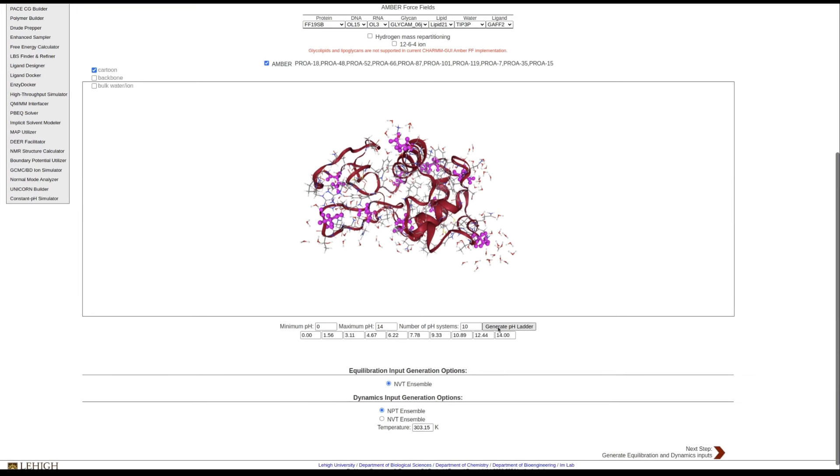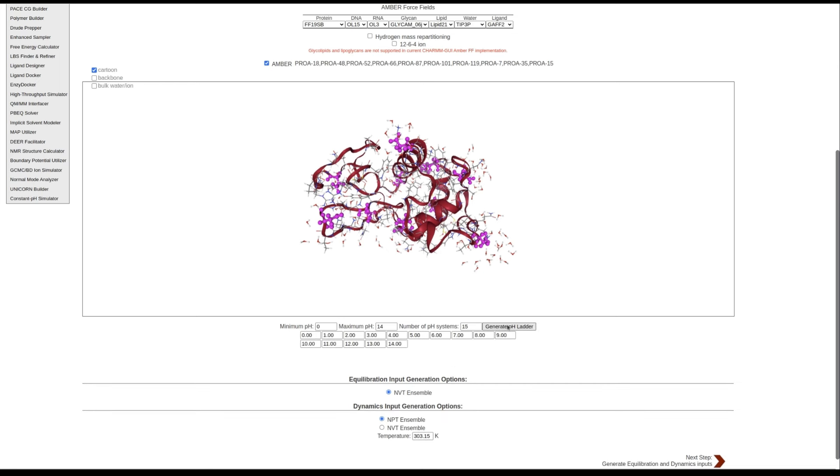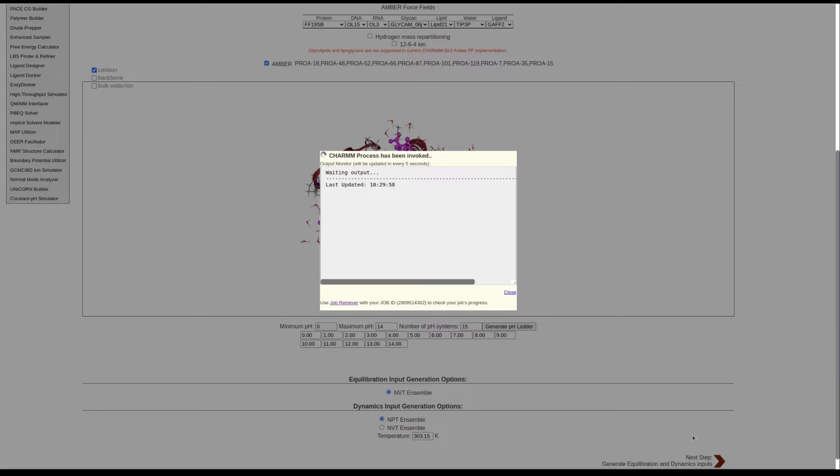Finally, you need to generate the pH ladder, meaning the range of system pHs that you will simulate. Minimum pH, maximum pH, and number of systems are your inputs, and CHARMM-GUI will generate an equally spaced pH ladder and corresponding system inputs for you.